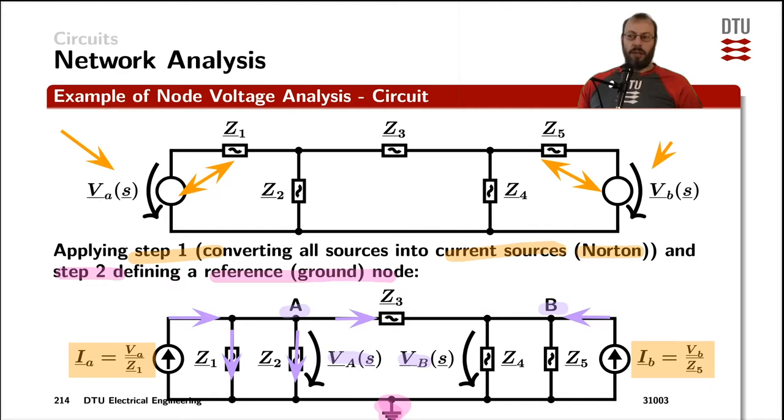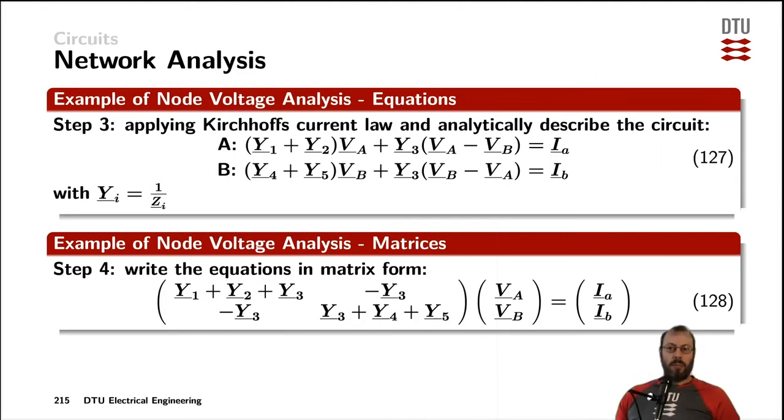The same way for the node B, we have the current flowing out of that, which is here the voltage VB across the admittance Y5, the voltage VB across the admittance Y4, and the voltage VB minus VA times the admittance Y3, also flowing out of that node. So summing up Kirchhoff's current law for each of the nodes, the node A here, we have all the source currents flowing into that node on the right-hand side of the equation, and the admittances times the respective voltages flowing out of the node on the left-hand side of the equation, and the same thing for the node B.